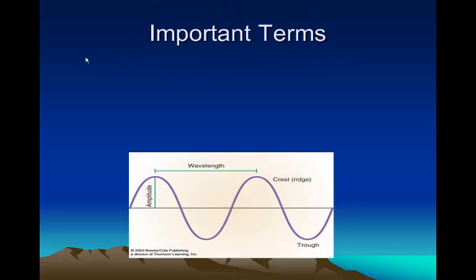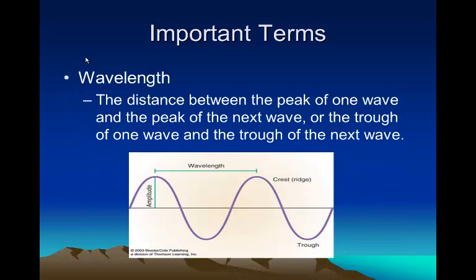Right now we're going to go over some important terms that you'll hear a lot throughout this class. The first is wavelength. That is the distance between the peak of one wave and the peak of the next, or the trough of one wave and the trough of the next.